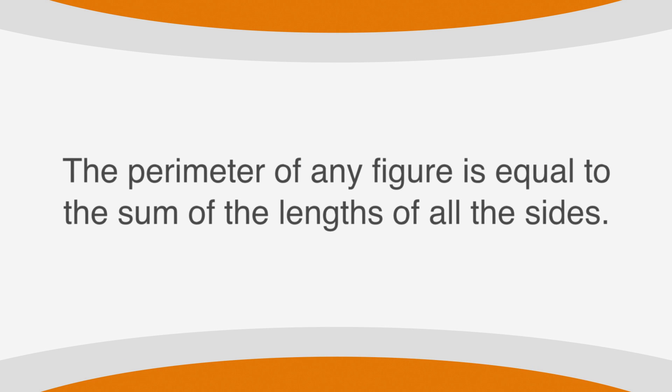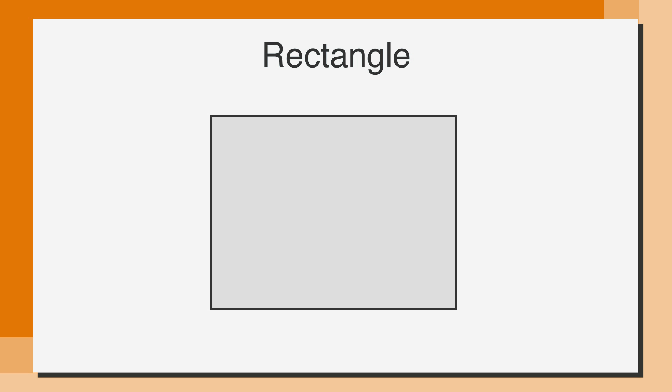The perimeter of any figure is equal to the sum of the lengths of all the sides. To find the perimeter of a rectangle, we just need to know the length of two adjoining sides. For example, in this rectangle, we know that the length of one side is 3, and the other 4.